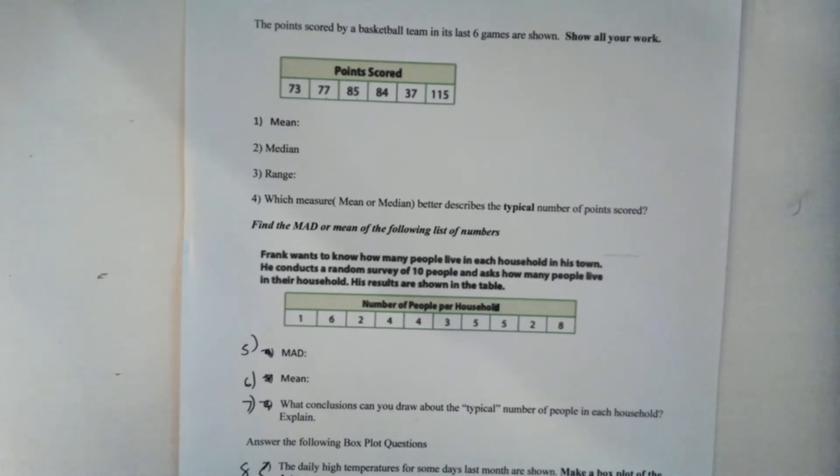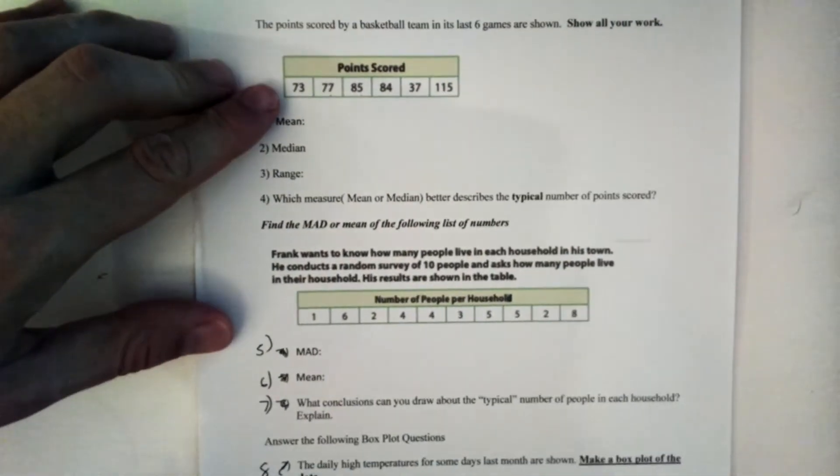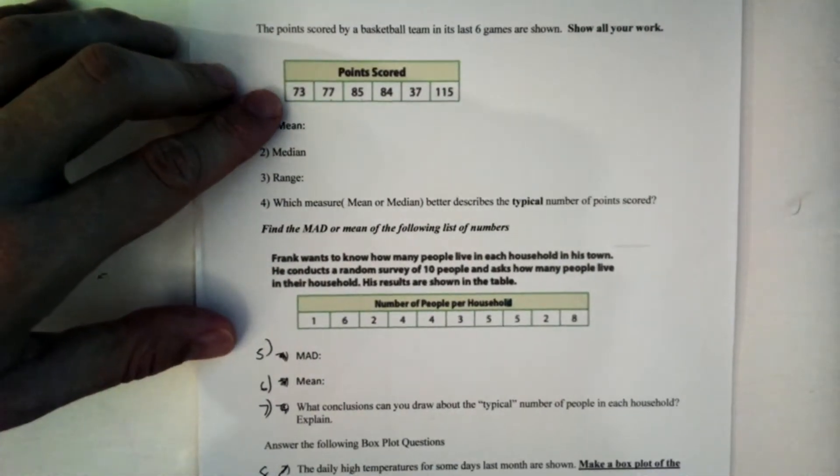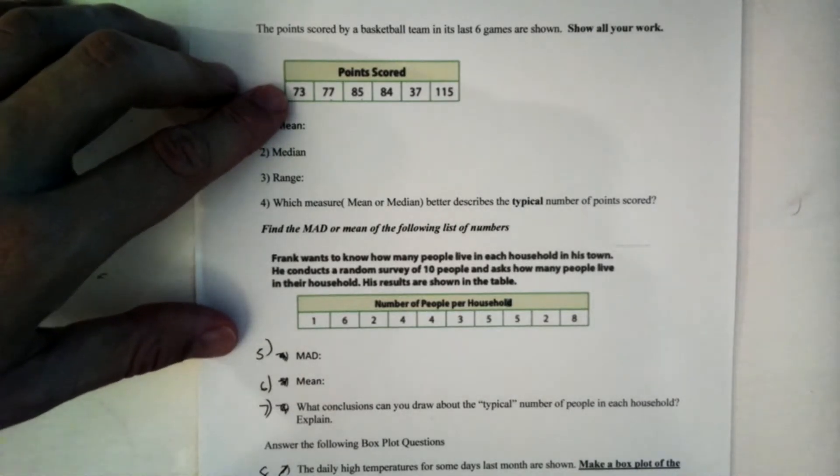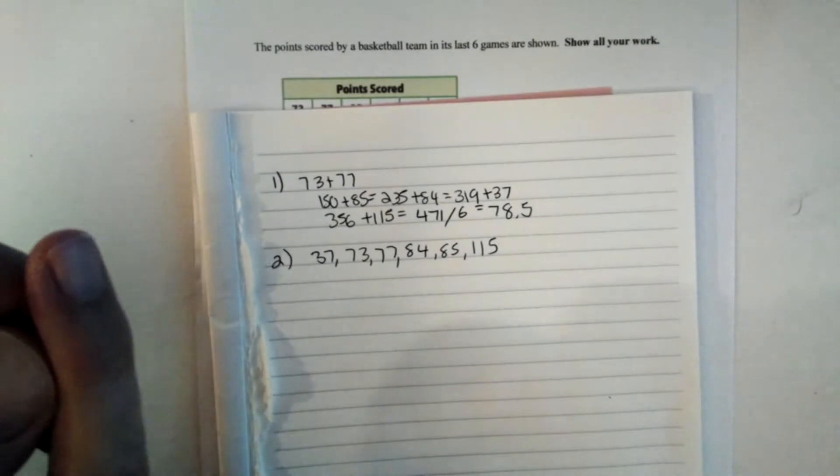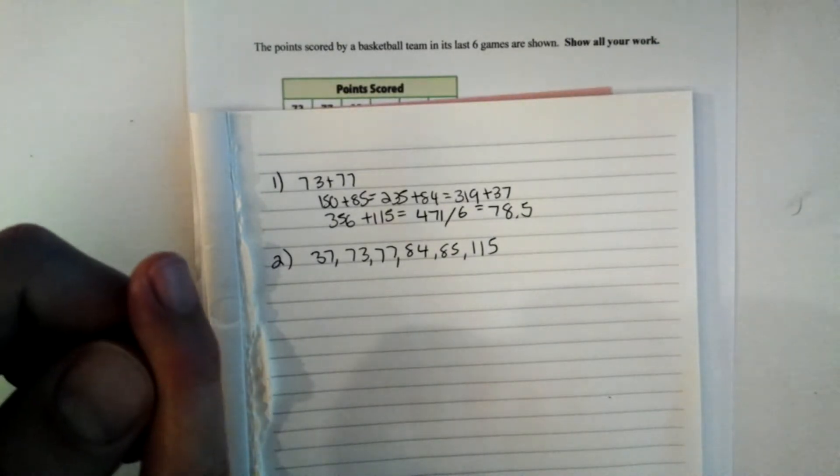Let's take a look at number two. We need to find the median. And remember, median means in the middle. It's important to remember that we must put these numbers in order from least to greatest. But they're not quite there yet. Let's pause the video and put our numbers in order from least to greatest. Now I put my numbers in order from least to greatest. Did you get the same thing as me?